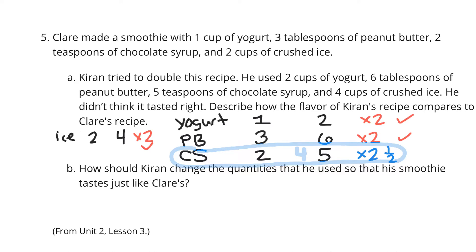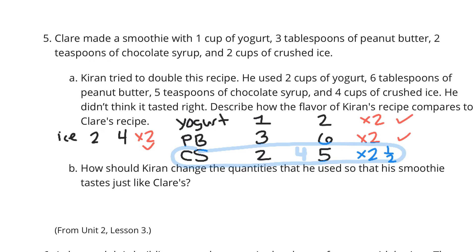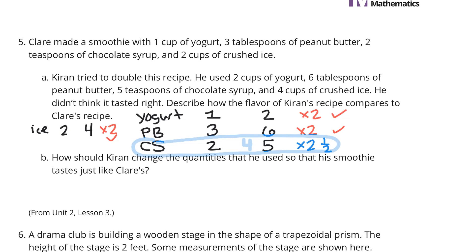And so he used more chocolate syrup than what the recipe called for to double it. So describe how the flavor of Kieran's recipe compares to Claire's. More chocolatey. Which I guess is never a bad thing, right? How should Kieran change the quantities that he used so that his smoothie tastes just like Claire's? Well, we already did that there. Should change chocolate syrup to 4 teaspoons.